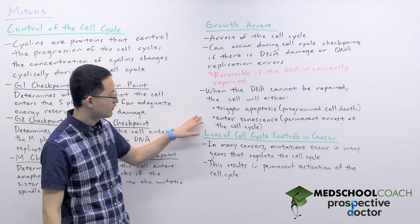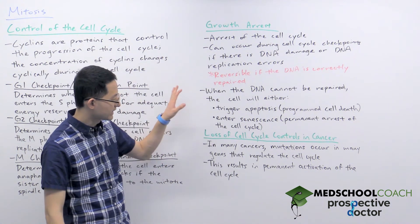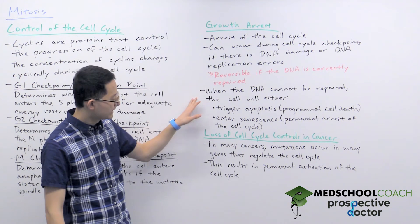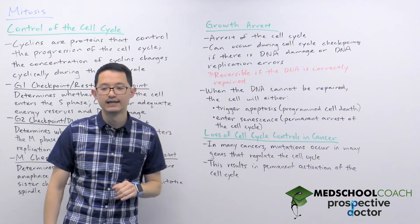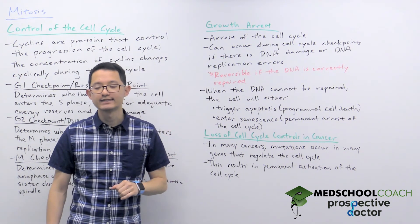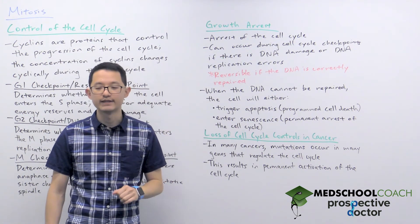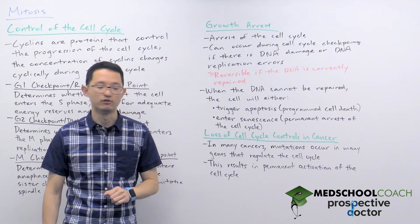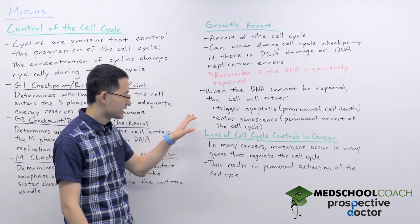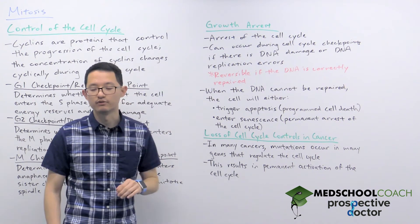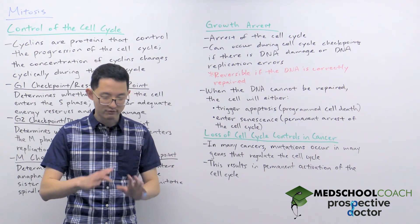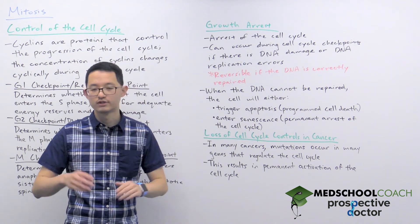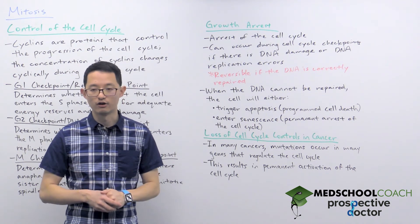Another option for cells that cannot repair the DNA is to enter senescence. Senescence is a permanent arrest of the cell cycle — it is irreversible. The cell essentially arrests the cell cycle and it won't continue along.